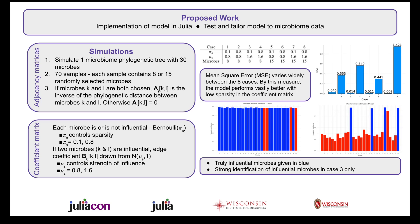The coefficient matrix is obtained by first sampling from the Bernoulli distribution to determine if each microbe should be influential on the response or not. If two microbes are influential, their edge coefficient is drawn from a normal distribution. The mean of the distribution controls the strength of the influence each edge has on the response and is set at either 0.8 or 1.6.